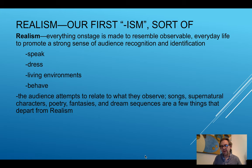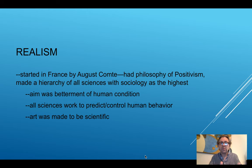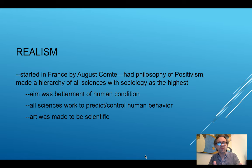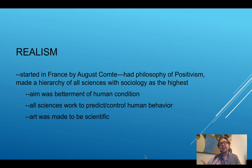Realism begins in Europe, and more specifically in France, with August Comte. Comte had a philosophy of positivism in which he creates a hierarchy of all the sciences and takes sociology as being the highest of the sciences. Think of this as Comte having a hierarchy in science where sociology — the study and investigation of human nature, of society, of people — is the most important and most significant.